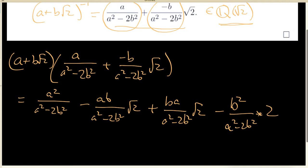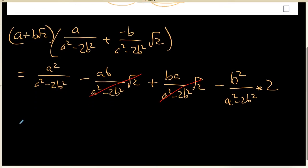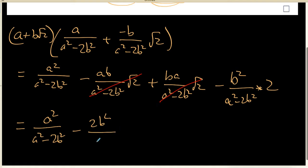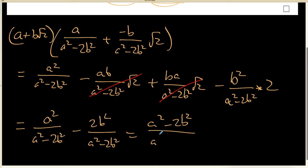When I start looking at these things, it doesn't take long to realize that the middle two terms add out to be 0, so they drop out. I can clean the rest of this up and realize that it's a squared over a squared minus 2b squared minus 2b squared over a squared minus 2b squared.